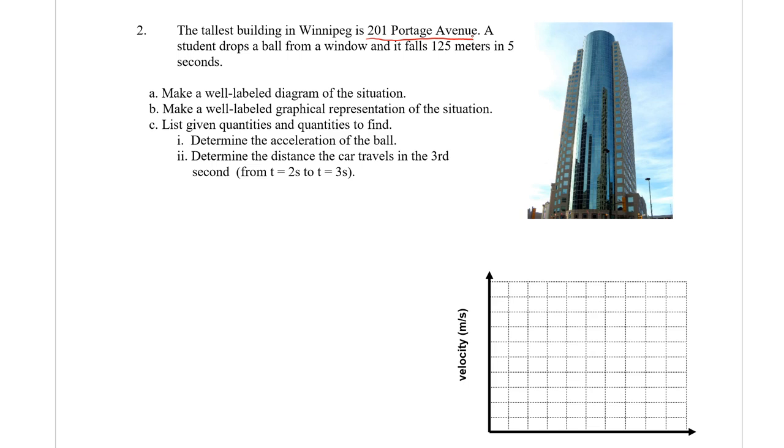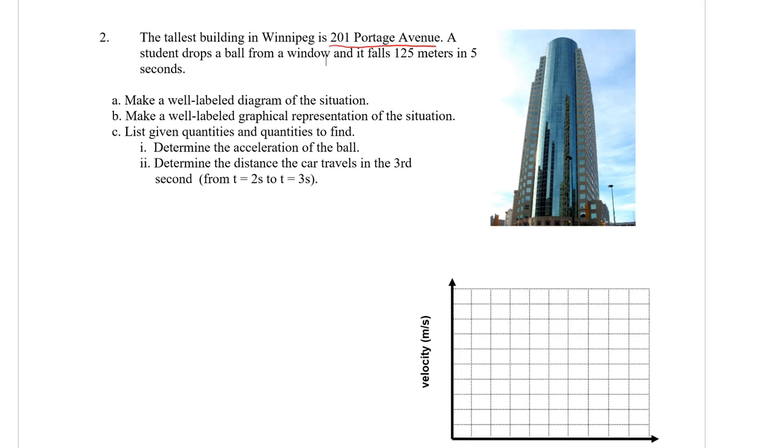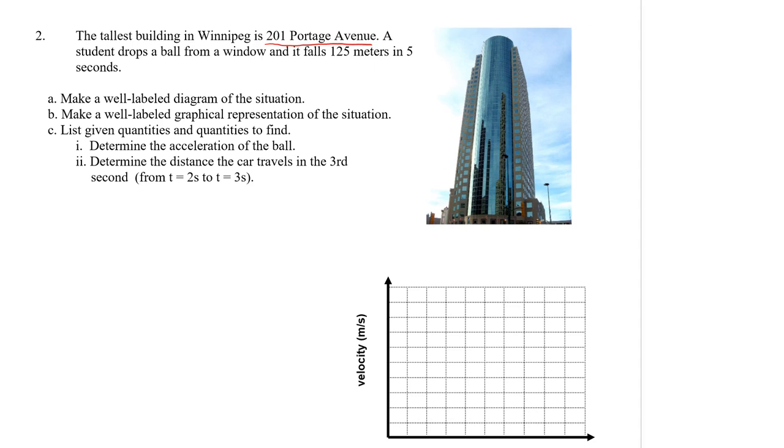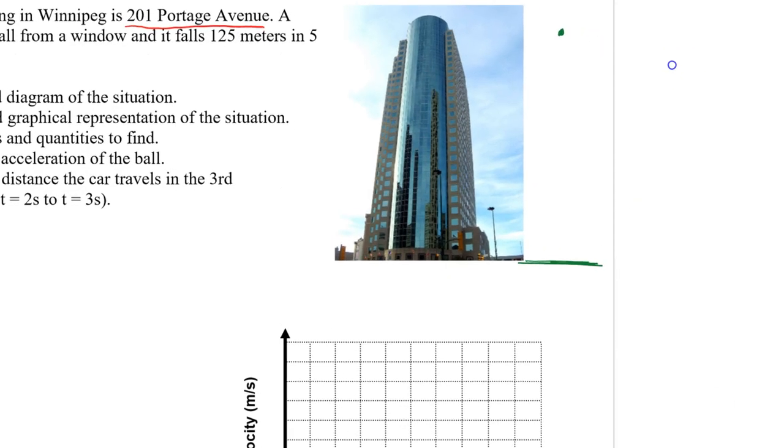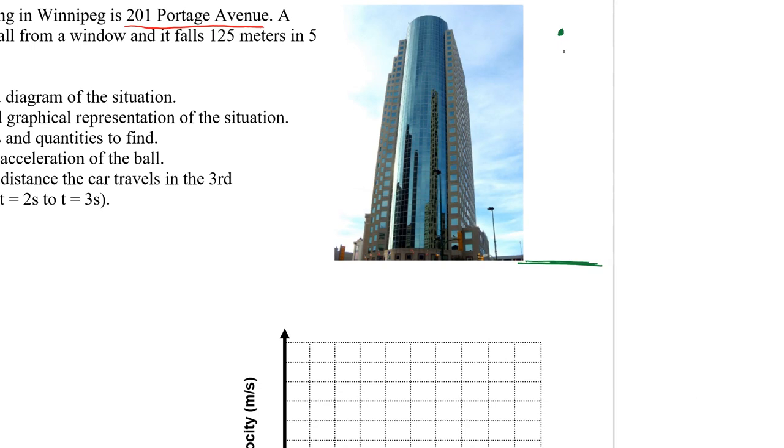A student drops a ball from a window and it falls 125 meters in five seconds. The first part says make a well-labeled diagram of the situation. I'll make a diagram over here. Let's say they drop the ball and it falls. I'll do a motion map here, so it's accelerating on the way down.